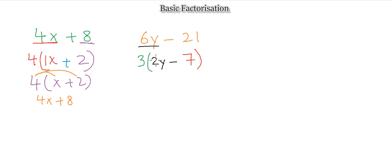So my factorized term is 3(2y − 7). If I expand it: 3 times 2y gives 6y, and 3 times −7 gives −21 — exactly the same as what I started with.